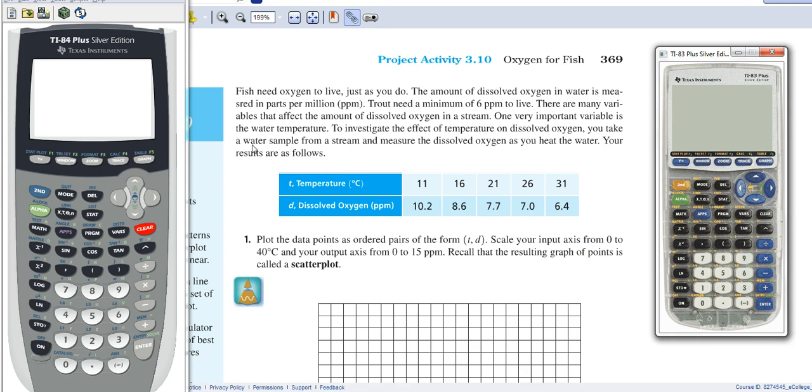So the first couple steps are all the same. Here's our information in activity 3.10, and we know that the temperature is the input and the dissolved oxygen in parts per million is the output based on this information regarding a trout. It says that the trout needs a minimum of 6 parts per million to live. So this information is modeled by a linear regression, or a line, but it's not exactly a line, so we're going to use linear regression to best approximate that.